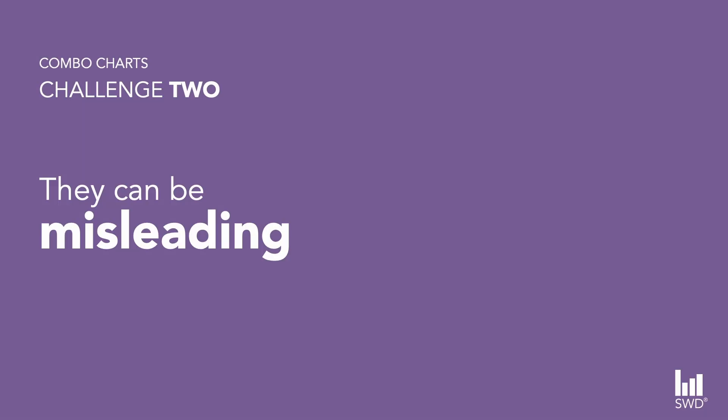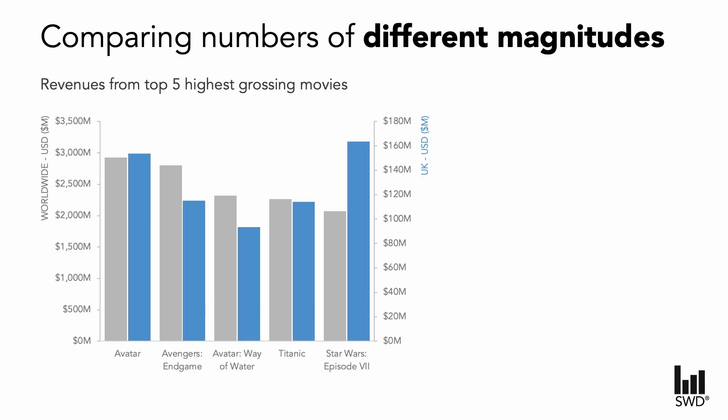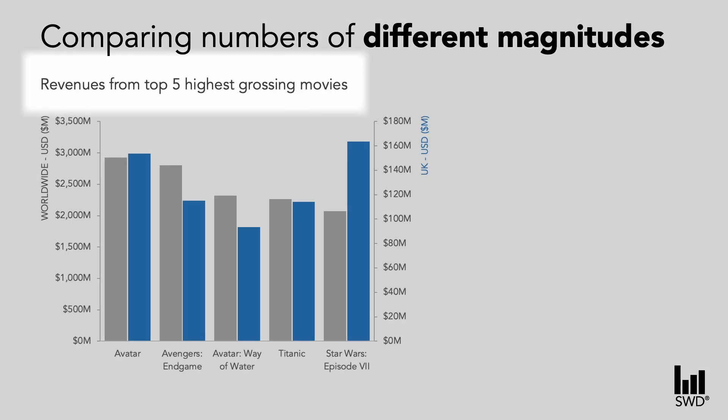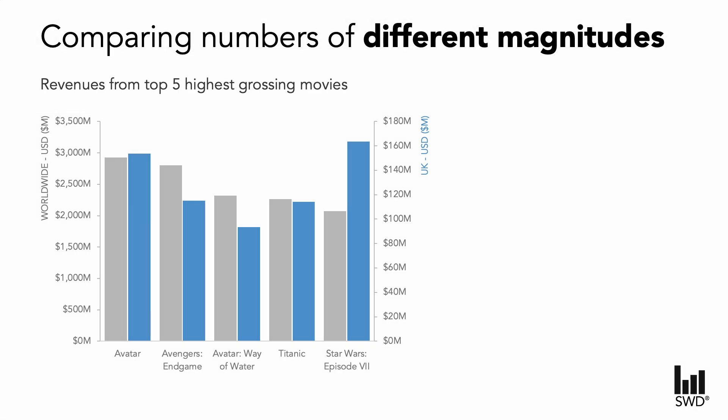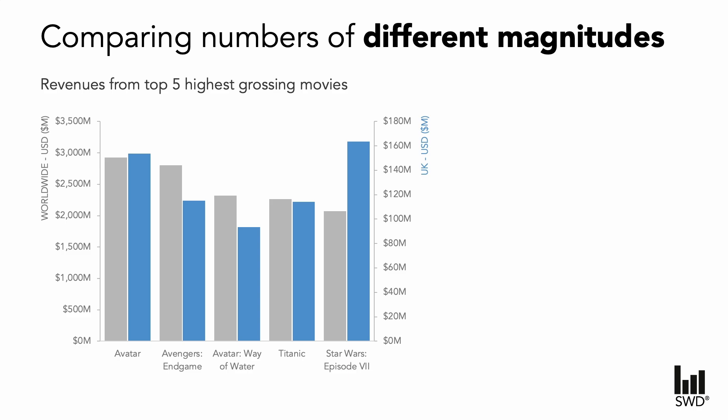More concerning than just taking longer to process is when we turn to combo charts to present and encode data of vastly different magnitudes. In this example we are looking at box office takings for the top five grossing films of all time. A combo chart has been used to represent worldwide takings in grey with UK takings in blue. We assess these bars by measuring bar length — something we are very good at — but by doing so we are making comparisons that just aren't correct. Are the UK takings for Avatar greater than the worldwide equivalent? Of course that doesn't make sense, but our eyes are already tuning into those comparisons.